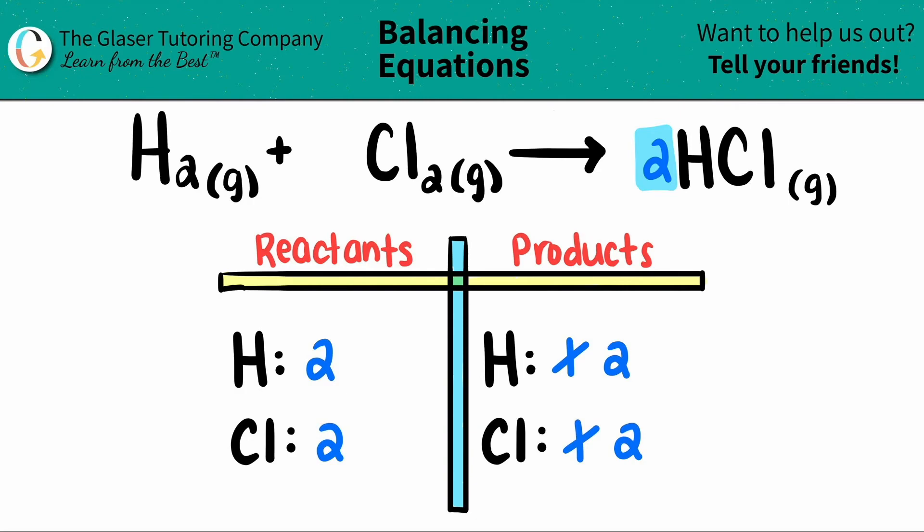But that's the beauty of balancing. By balancing one thing, we secretly balance the other thing. And now we have the balanced equation. So the balanced equation is 1 H2 plus 1 Cl2, which will yield 2 HCls.